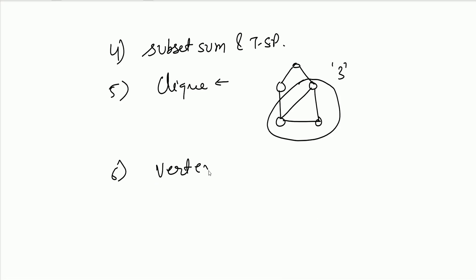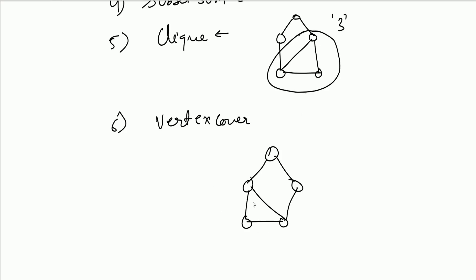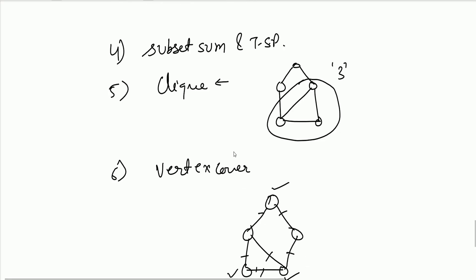Then there is the Vertex Cover problem: given a graph, choose the minimum number of vertices such that every edge is covered. For example, choosing a vertex covers the edges incident to it. Here, choosing certain vertices covers all edges, and the minimum is 3 vertices. This is also an NP-Complete problem. In the next video, we will see the Subset Sum problem and the Travelling Salesman Problem. Thank you.